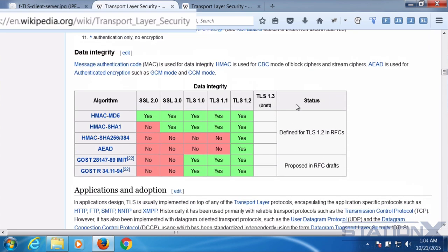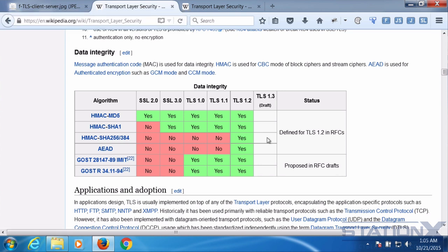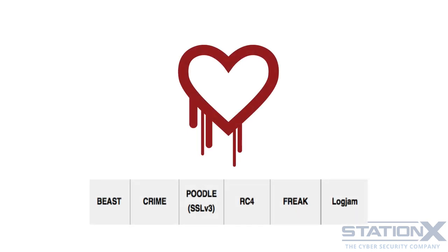We can also see the hashes and MACs used to maintain data integrity. MD5 shouldn't be used. SHA-1 is getting very old, and we should be using the later versions of SHA — 256 and 384 — though for compatibility reasons these aren't always used. Attempts have been made to compromise TLS, and the protocol has been revised several times to address evolving threats. Examples include Beast, Crime, Poodle, and Logjam. Browsers and server implementations of SSL have had to be upgraded by developers to keep up with these attacks and defend against vulnerabilities.